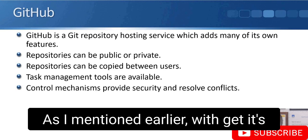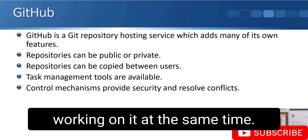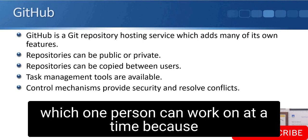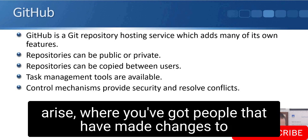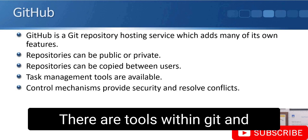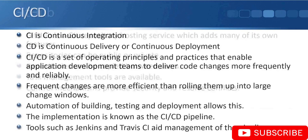Because Git is distributed and multiple people can work on it at the same time, conflicts can arise where different developers have made different changes to the same part of the code. Control mechanisms within Git and GitHub provide security and help resolve those conflicts.